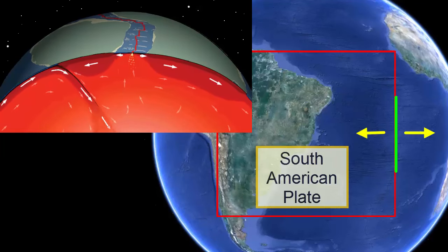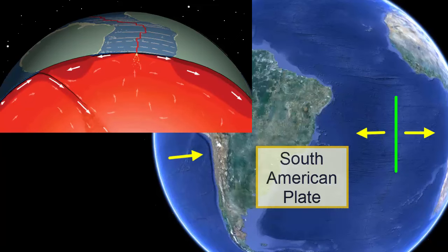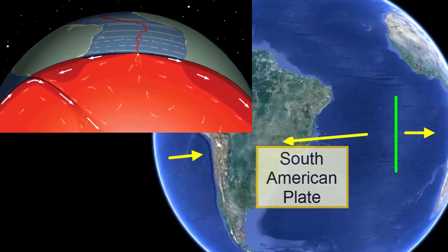The entire unit is being pushed away from the seafloor spreading center that marks the center of the Atlantic Ocean. In fact, that's why the subduction zone on the western margin even exists. The seafloor spreading in the Atlantic is causing the collision on the western margin.